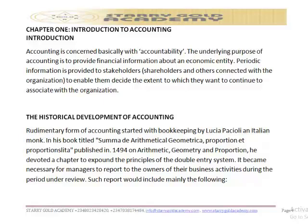Now turning to the historical development of accounting: rudimentary accounting started with bookkeeping by Luca Pacioli, the father of accounting. In his book — the Summa de Arithmetica, Geometria, Proportioni et Proportionalità — published in 1494 on arithmetic, geometry, and proportion, he devoted a chapter to explore the principles of the double entry system.